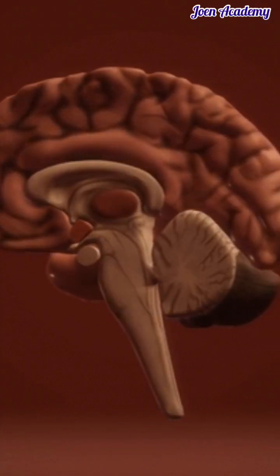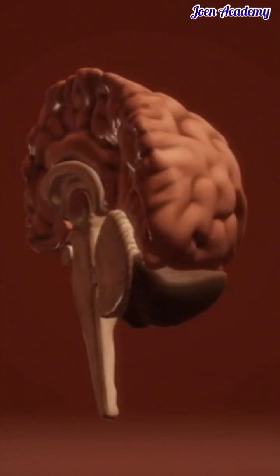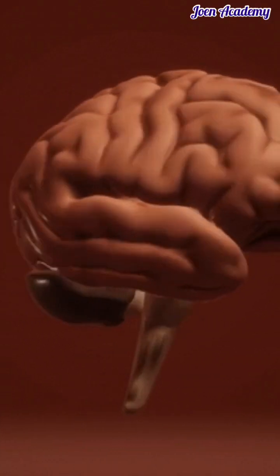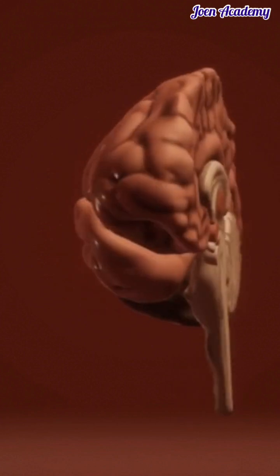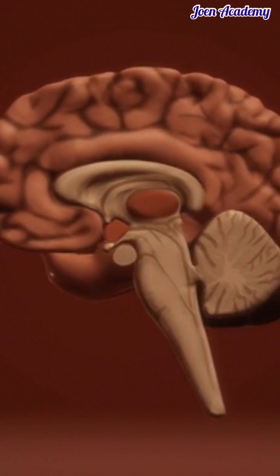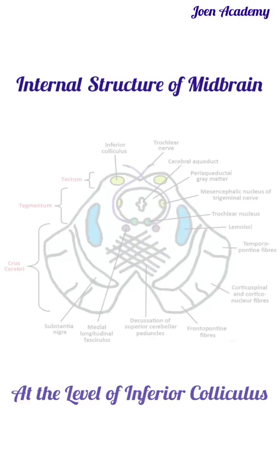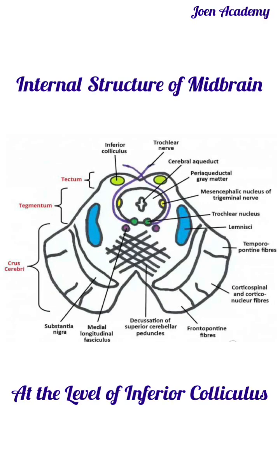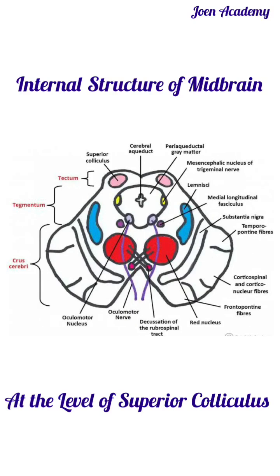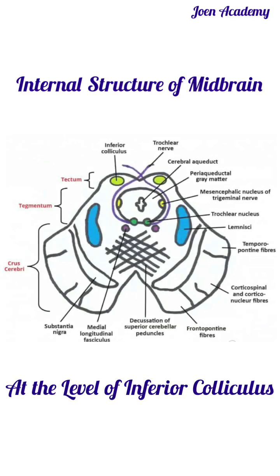Welcome to Join Academy. Let's quickly go through the internal structures of the midbrain in less than 60 seconds. These structures will be discussed at two levels: at the level of the inferior colliculus and at the level of the superior colliculus. In this video, we'll be focusing on the level of the inferior colliculus.